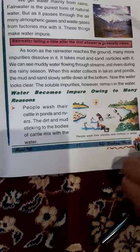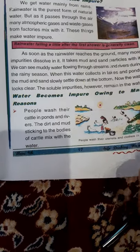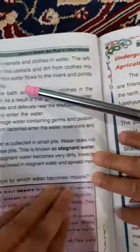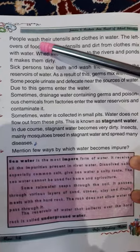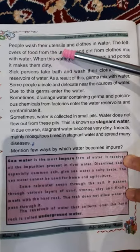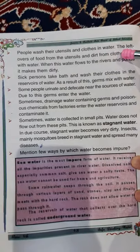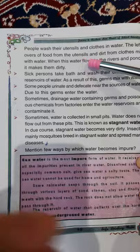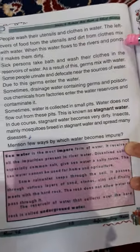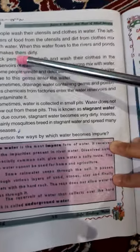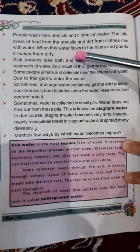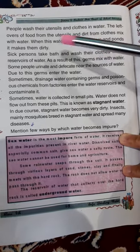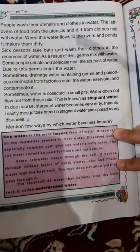People wash their utensils and clothes in water. The waste food from the utensils and the dirt from the clothes mix with the water. When this water flows to the rivers and ponds, it makes them dirty.